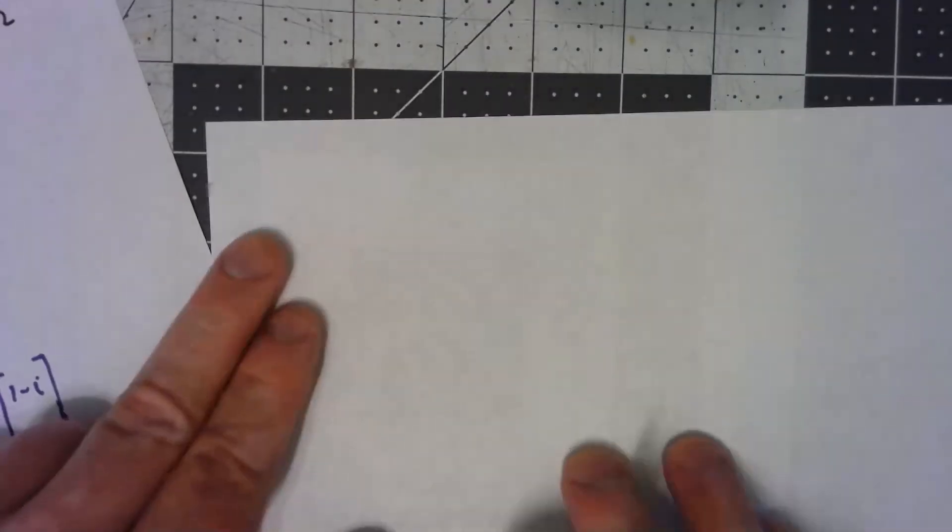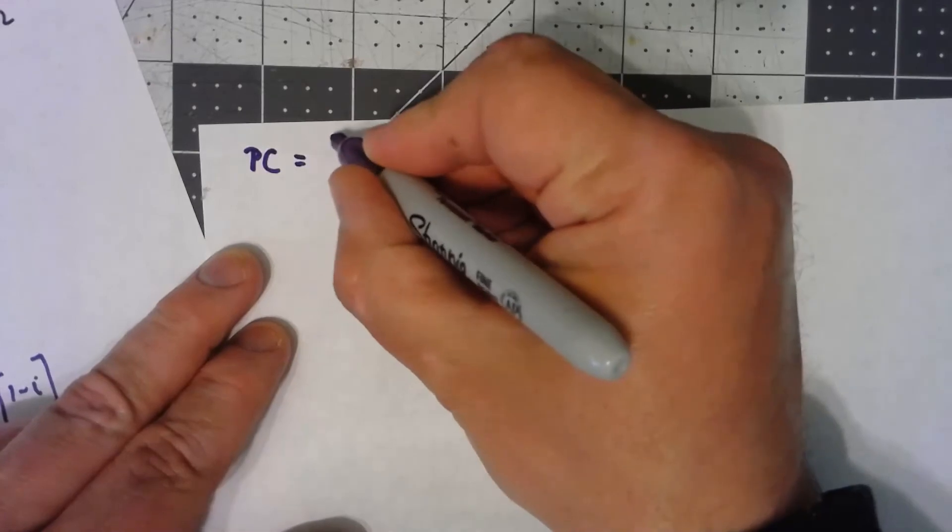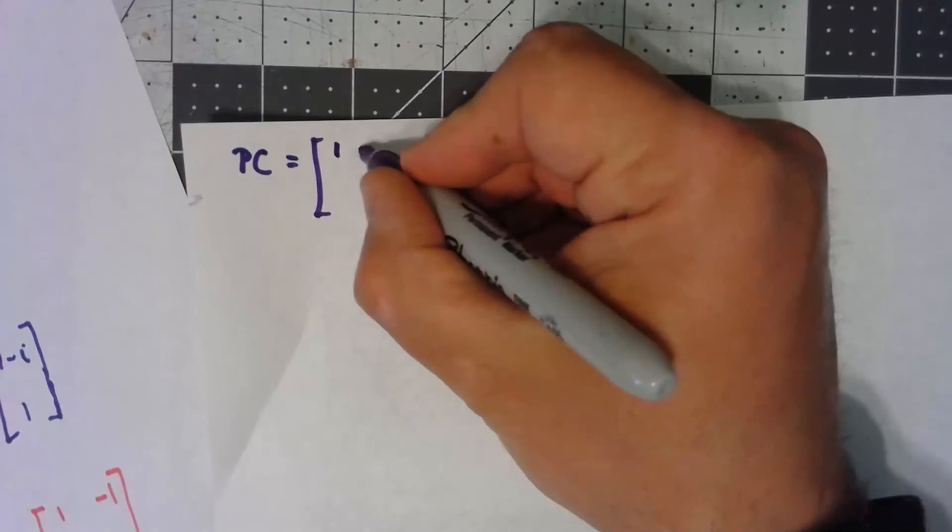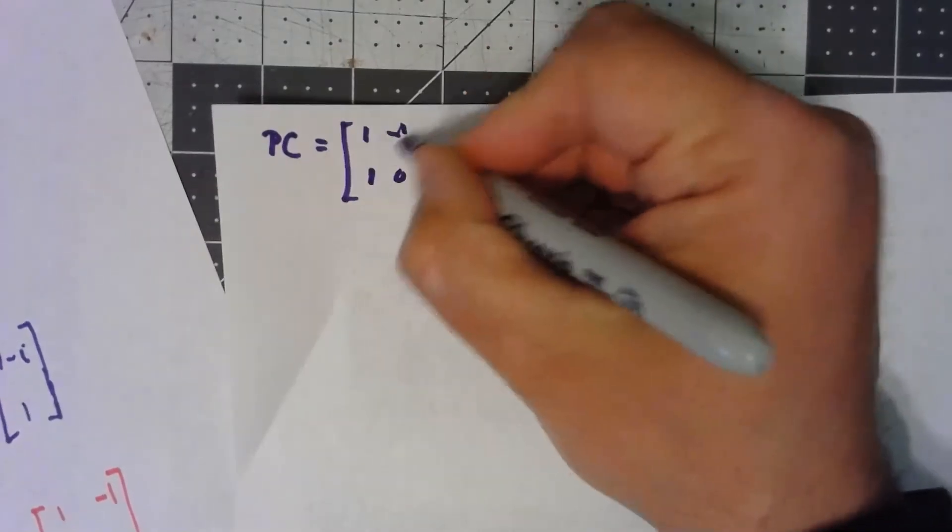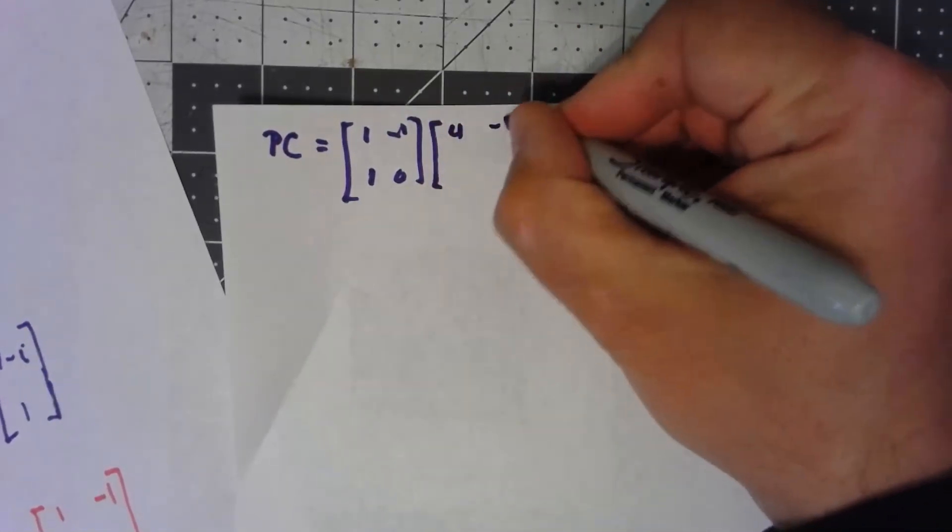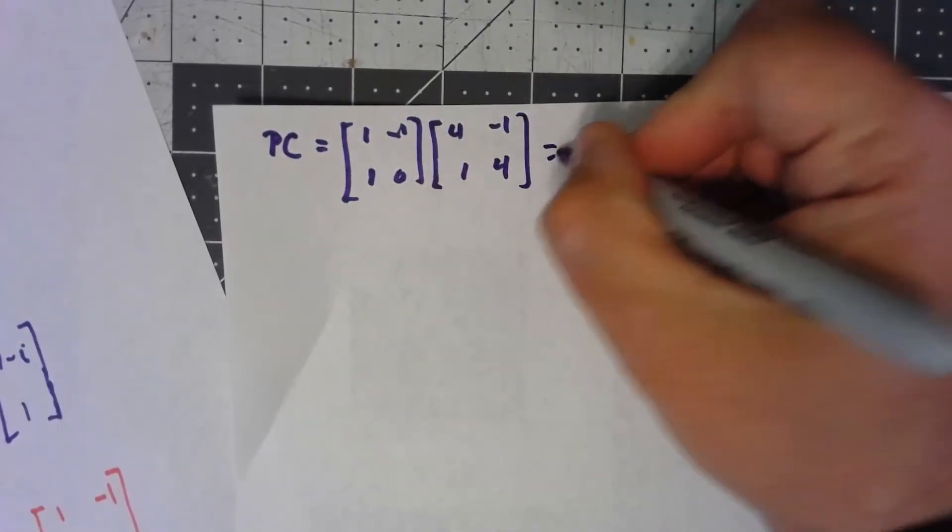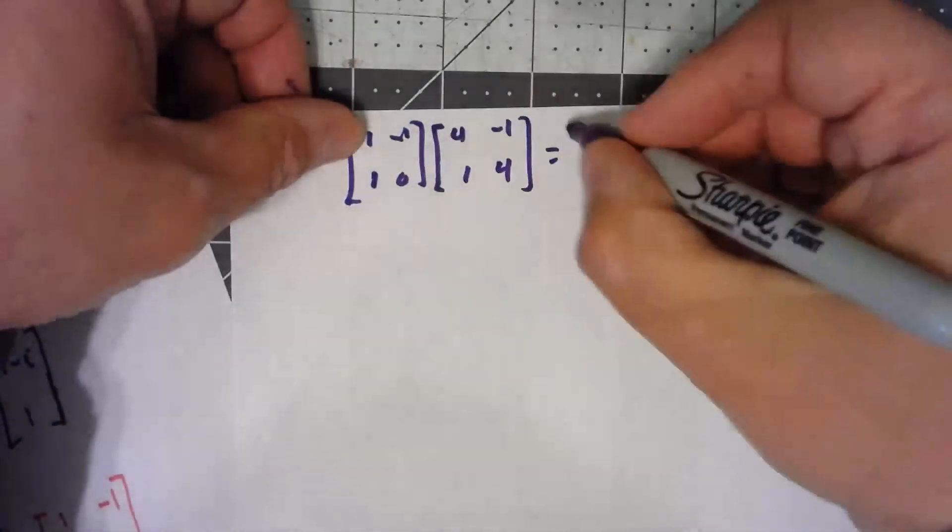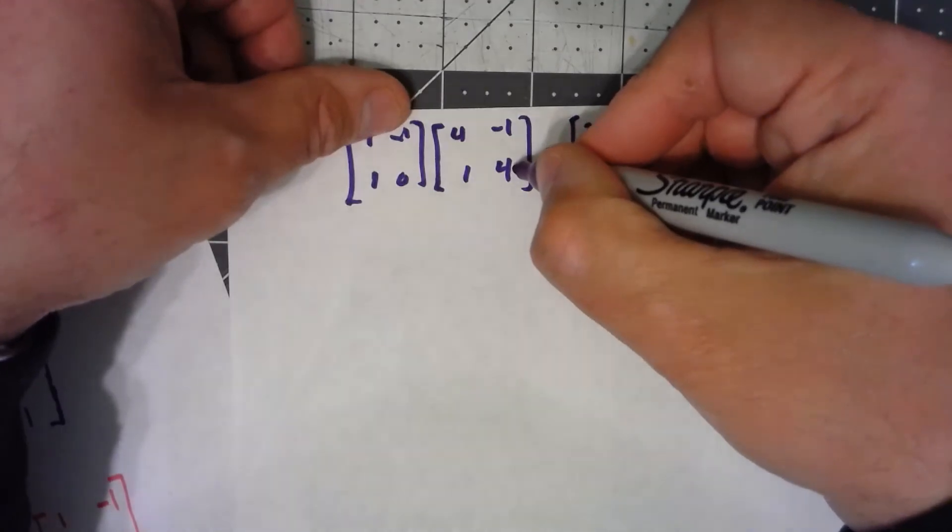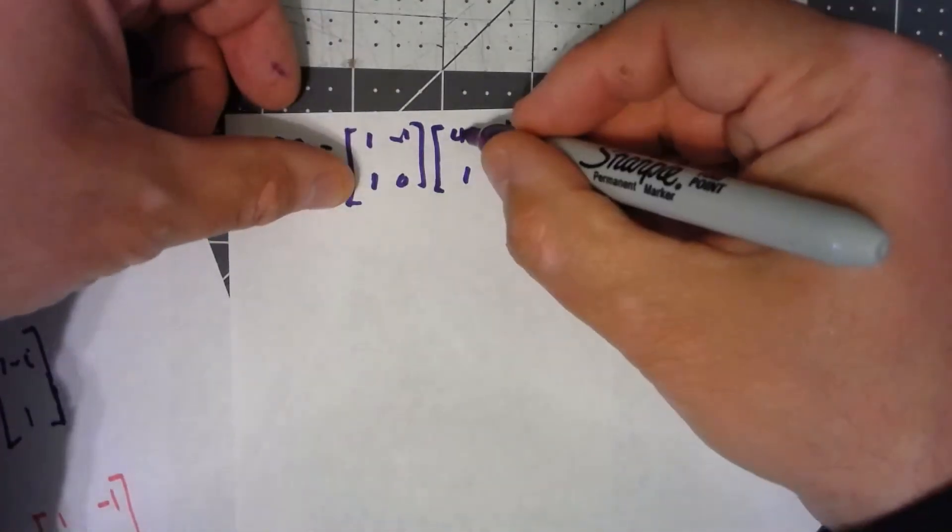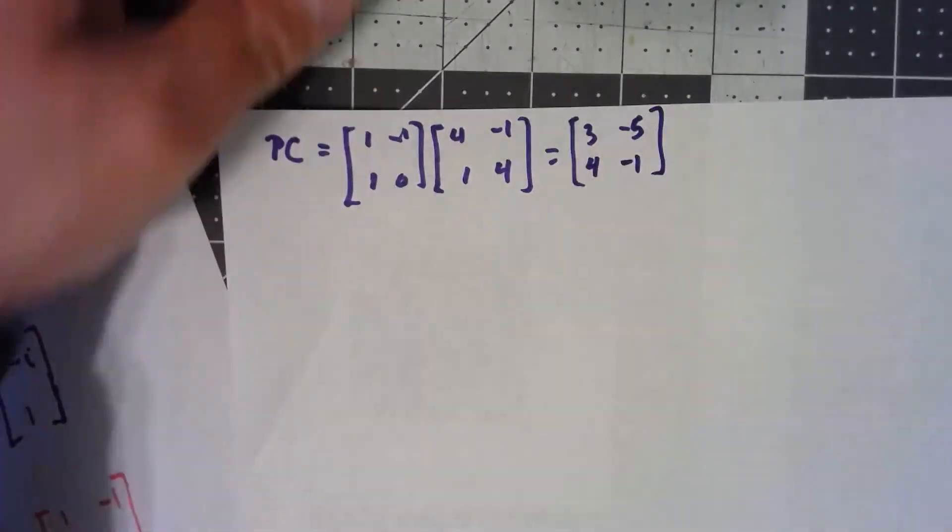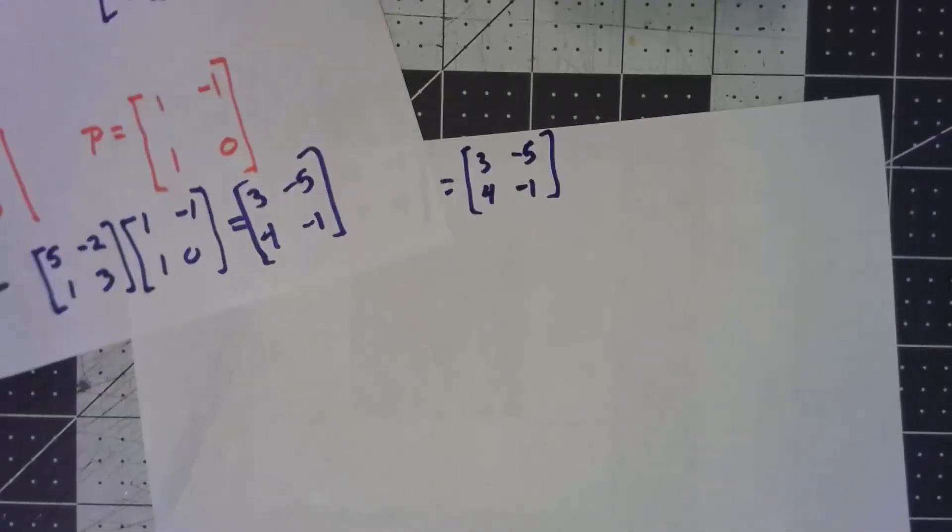Okay, then PC was [1, -1; 1, 0] times C was [4, -1; 1, 4]. 4-1 is 3, -1-4 is -5, 4+0 is 4, -1+0, -1. And there we go. Both ways I get the same thing.